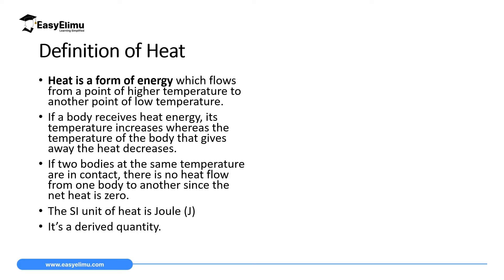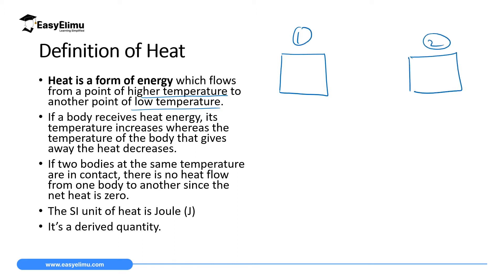So what is heat? Heat is defined as a form of energy which flows from a point of higher temperature to a point of lower temperature. For example, if you have body one at 100 degrees Celsius and body two at 20 degrees Celsius, and these two bodies are in contact, heat will move from the high temperature to the low temperature. So this is the direction of heat flow.